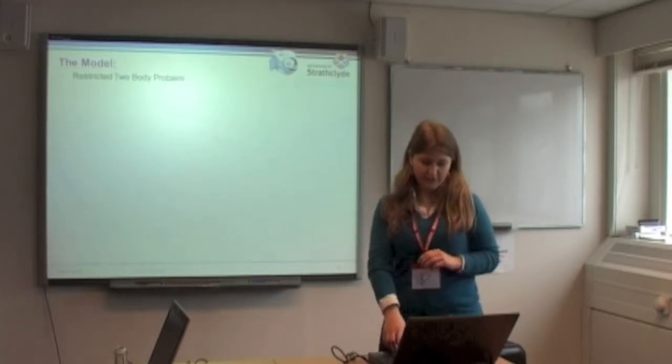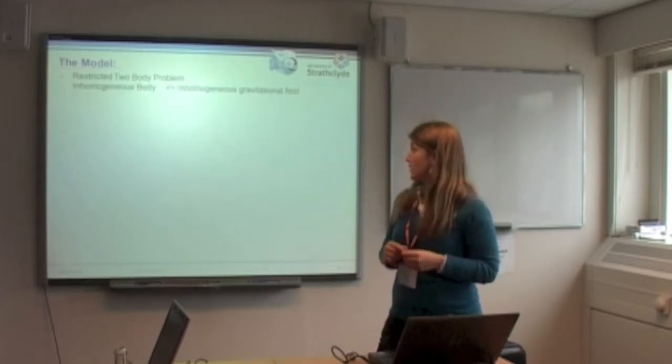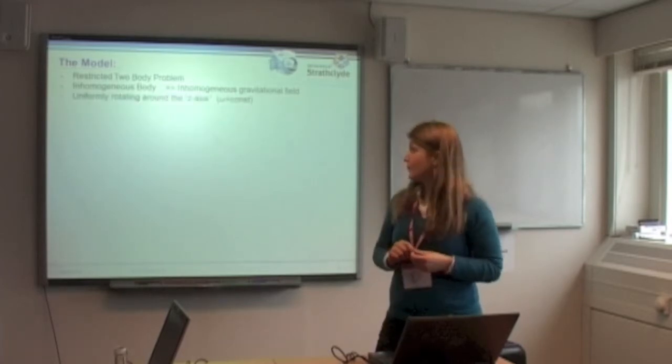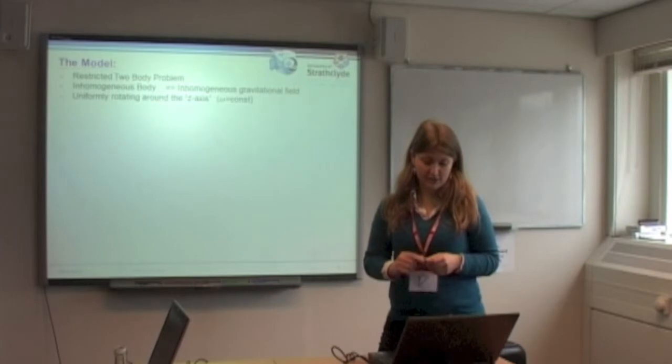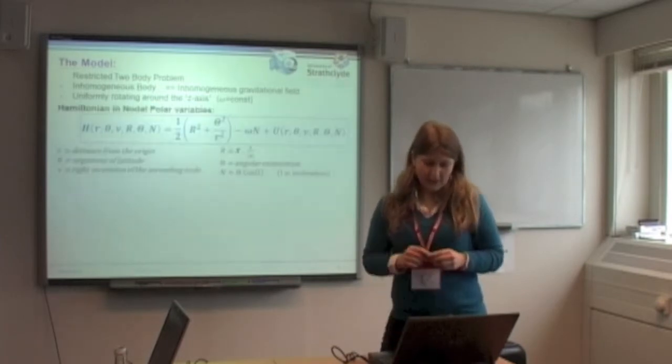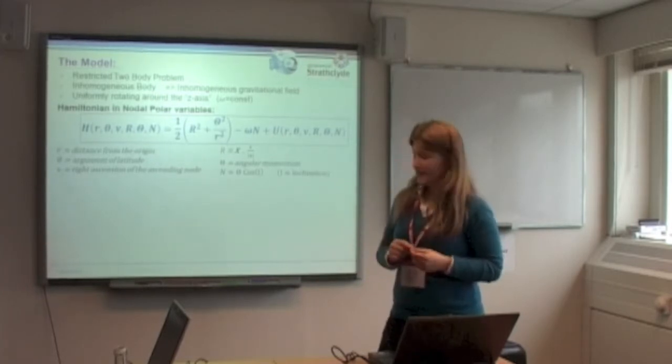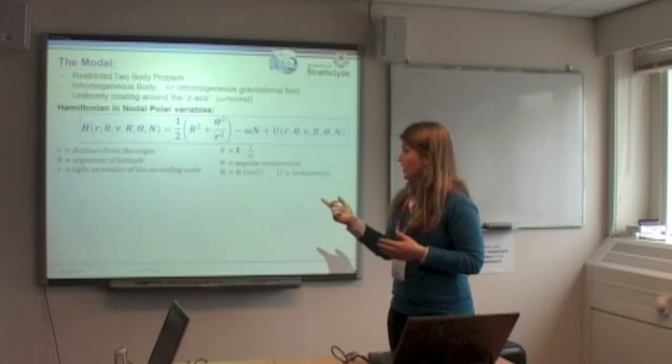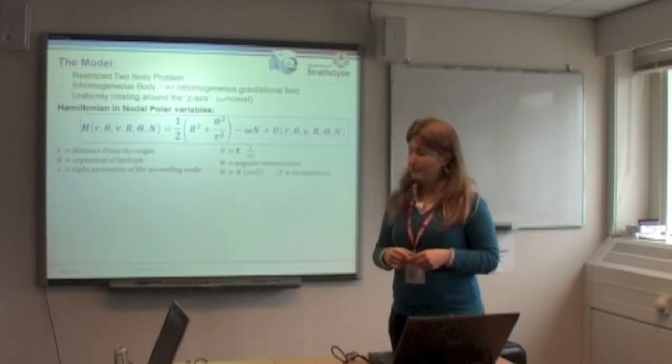The model that we have is a restricted two-body problem, with a massless spacecraft and an inhomogeneous body that produces an inhomogeneous gravitational field. We suppose that the asteroid is uniformly rotating around the z-axis with a constant angular velocity. The Hamiltonian in Whittaker or Nogar polar variables looks like this, where r is the distance from the asteroid. Theta and nu are the argument of latitude and the argument of node, and the capital ones are just the conjugate of the three variables.